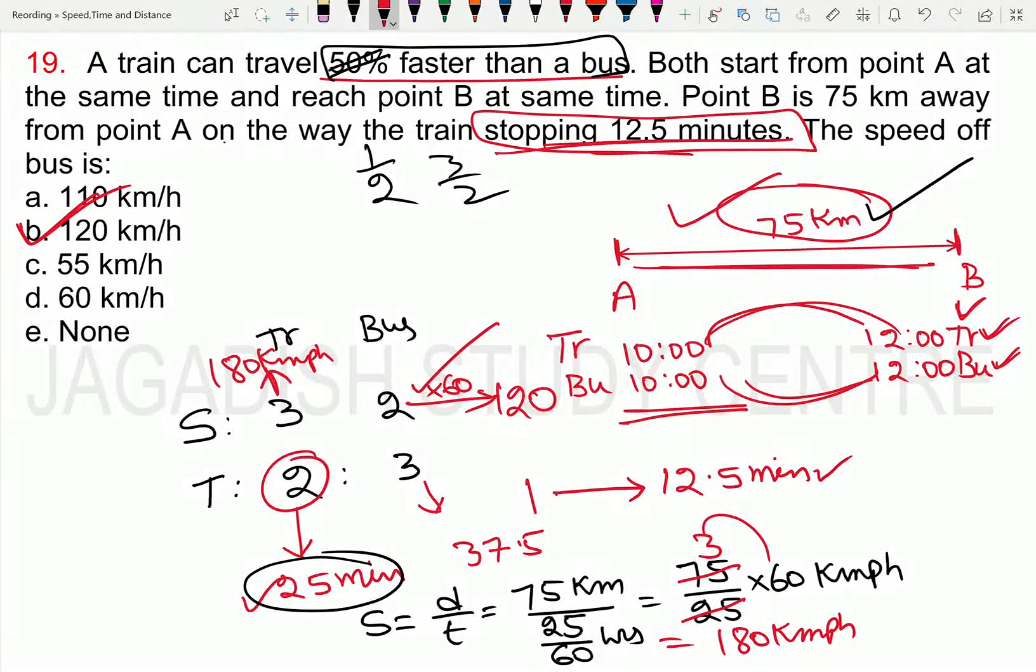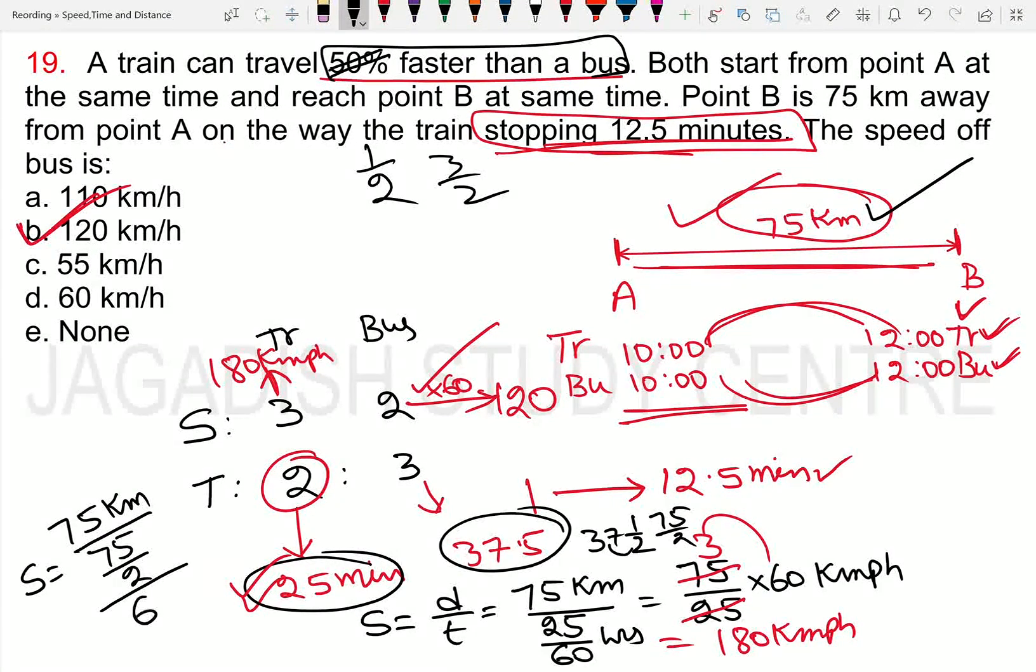The speed of the bus is calculated as distance 75 km divided by time 37.5 minutes. This is nothing but 75 by 2 minutes. Converting to hours by dividing by 60, we get 75 divided by 75 times 2, which simplifies to 2 times 60, giving us 120 km per hour. This is the speed of the bus.